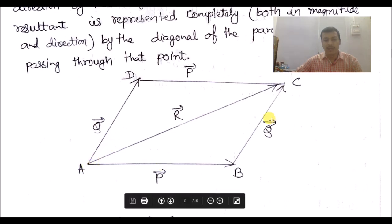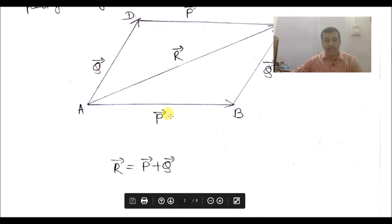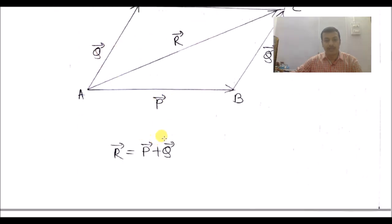Here, vectors P and Q are represented by two adjacent sides AB and AD of the parallelogram. So the resultant R is equal to P plus Q, represented by the diagonal of the parallelogram.